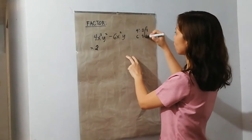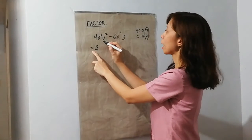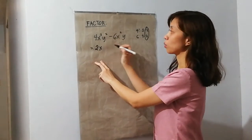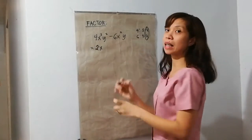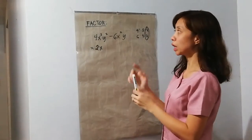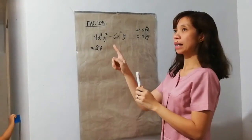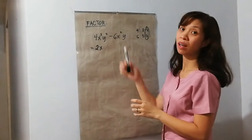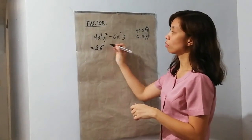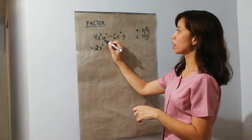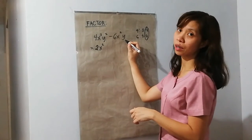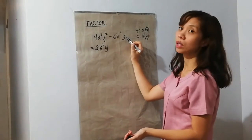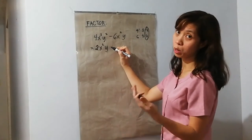And then, may x dito, meron din ditong x. So, common factor nila is x. The shortcut here, yung technique — pagka variables, alin ang common factor nila? Tingnan lang ninyo yung pinakamaliit na exponent. So, dito x cubed, dito x squared, so pinakamaliit na exponent is 2 — yun na yung common factor. And then, we have y here sa first term, we also have y sa second term. The common factor is y. Ang exponent ng y dito is 2, ang exponent dito is 1. So, the common factor is y, ang exponent is 1.